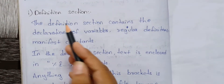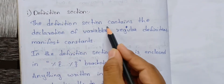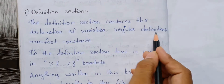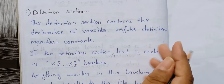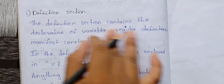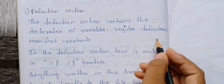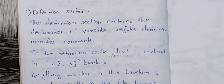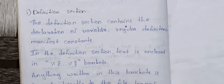The Definition section contains declarations of variables, regular definitions, and manifest constants. Technically, it is the declaration of variables, definitions, and constants with initialized values. So the Definition section is where variables are declared and defined.